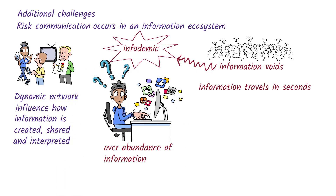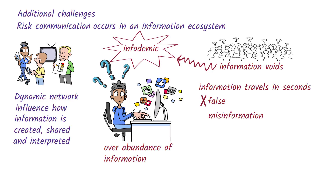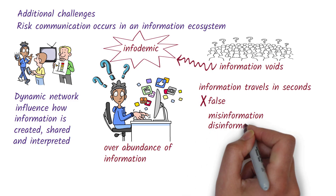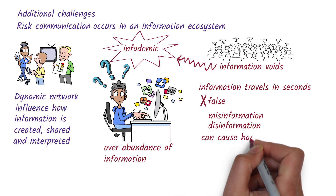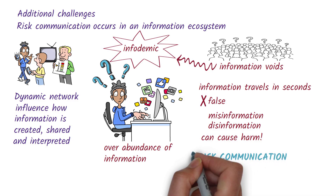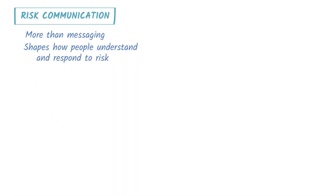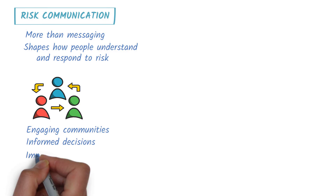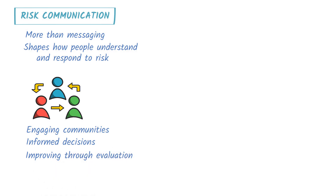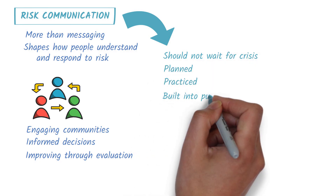Some of the information is false. Some of it is misinformation — false or misleading information shared without intent to harm — and some of it is disinformation — false content deliberately created to deceive people. Either way, both can cause harm. That's why effective risk communication is critical. In public health, risk communication is more than just messaging; it's the vital link that shapes how people understand and respond to risk. At its heart, it's about engaging communities, helping people make informed decisions, and constantly learning and improving through ongoing evaluation. Risk communication should not wait for a crisis — it needs to be planned, practiced, and built into every part of public health preparedness.